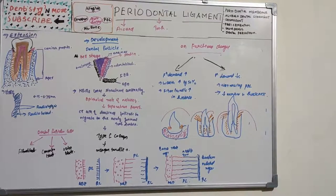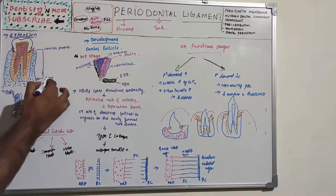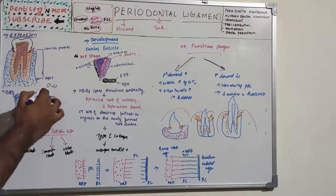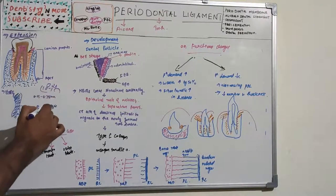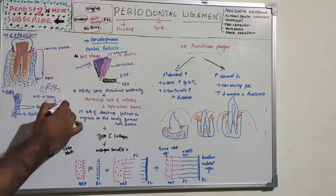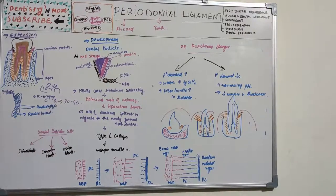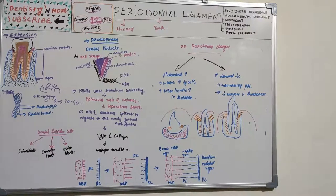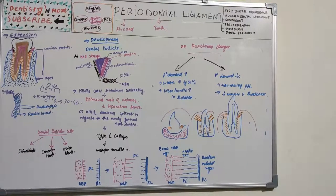The average width changes with age: around 0.21 mm at 10–15 years, 0.18 mm at 30–50 years, and approximately 0.15 mm in older age. Width also changes according to functional state: at eruption it is around 0.1–0.5 mm; at full function about 0.15–0.3 mm; and it reduces in hypofunction.